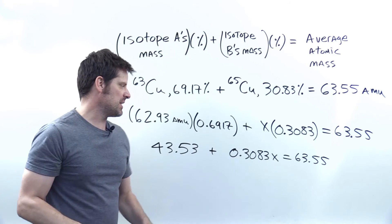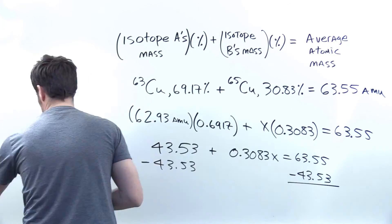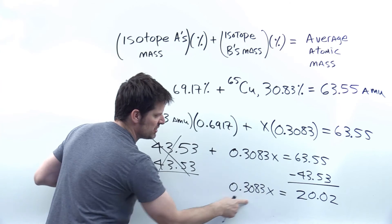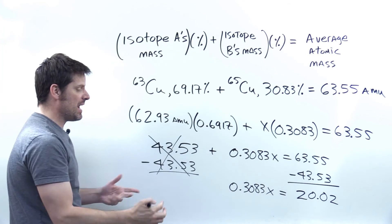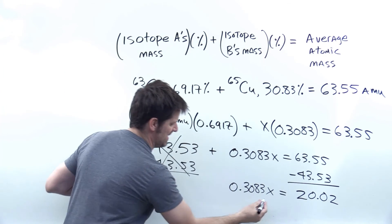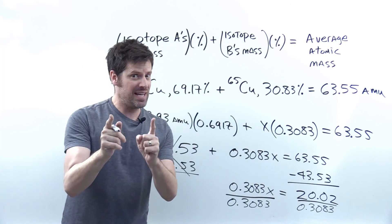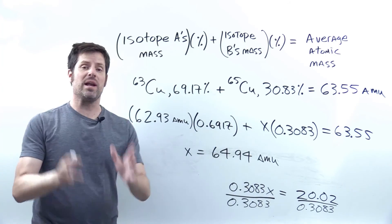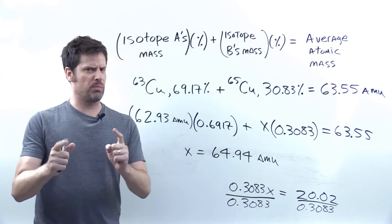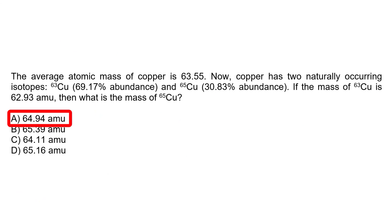To isolate X, I'm going to subtract this number from both sides, which gives me this term being equal to that number. I now divide both sides by 0.3083, and end up finding X being equal to 64.94 AMUs after rounding to the proper number of significant figures. That number, as you can see, lines up with option A.